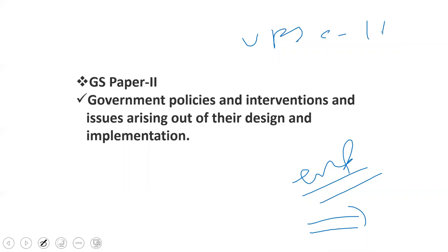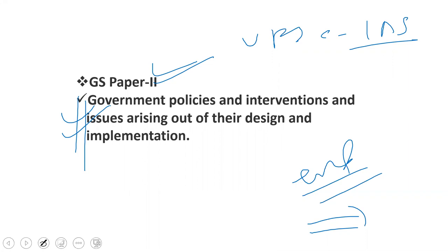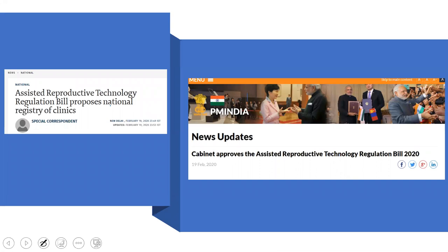This topic falls under GS Paper 2 for UPSC and IAS examination, specifically under government policy interventions and issues arising out of their design and implementation. If questions related to these topics come, you can include this concept in your answers. Let's discuss all the dimensions of this topic in detail.